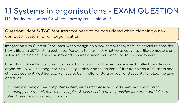There are several, but here are five. First, integration with current resources: when designing a new computer system, it's crucial to consider how it fits in with existing tech tools. We want to maximize what we already have, like computers and software, to save money and ensure a smoother transition. Second, ethical and social impact: we must think about how the new system might affect people in the organization — will it change their roles or possibly lead to job losses? It's vital to ensure fairness and ethical treatment. Additionally, we need to be mindful of data privacy and security to follow laws and rules.